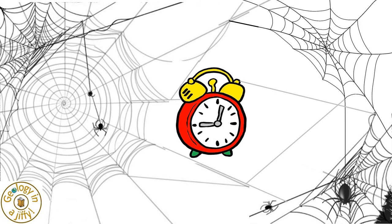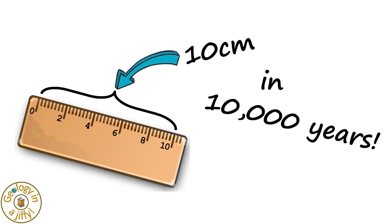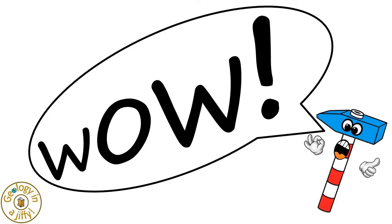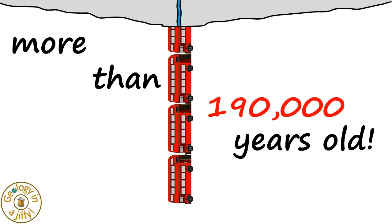Limestone stalactites form extremely slowly. Scientists have worked out that some stalactites grow about 10 centimetres every 10,000 years. Wow! If we think of the stalactite in France, the one over three bus lengths long, scientists think this has taken 190,000 years to form.